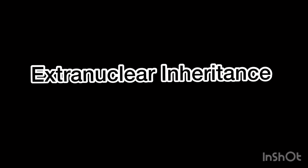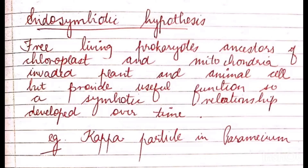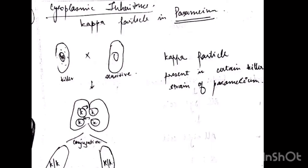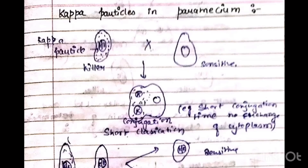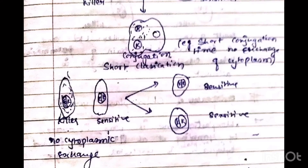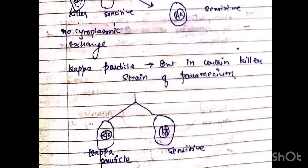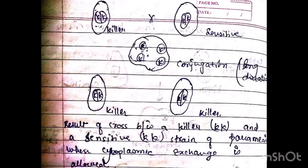The next type is extra nuclear inheritance by endosymbionts. Certain intracellular parasites such as bacteria and virus particles maintain symbiotic relationships; they are self-reproducing and appear as cytoplasmic inclusions. This relationship is called the endosymbiotic hypothesis, and a classic example is the kappa particle in Paramecium. We have thus studied extra nuclear inheritance with two types — mitochondrial and chloroplast — and two modes: extra nuclear and maternal.